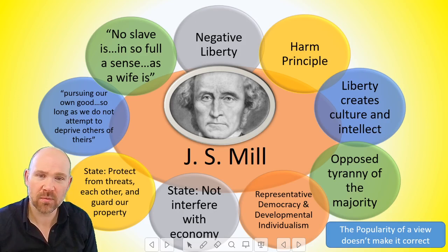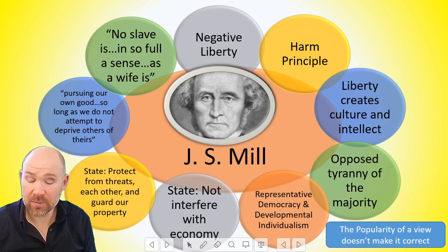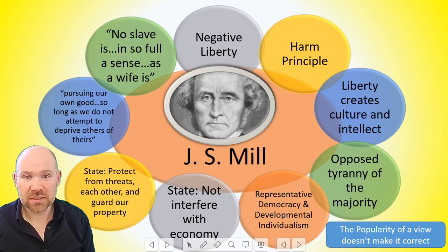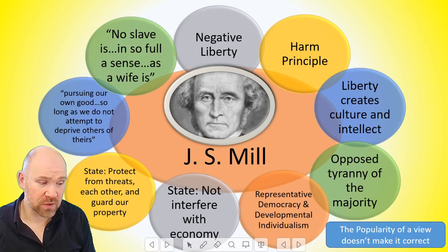There is a nice quote from Mill that goes with negative liberty and the harm principle: that so long as we are pursuing our own good, we can do that as much as we want, so long as we do not attempt to deprive others of theirs. He also wrote: 'There is no slave... in so full a sense as a wife is.' He started to talk about the role and rights of women, arguing that a wife is in many ways enslaved to her husband. You can use this quote from J.S. Mill when discussing Wollstonecraft and later Betty Friedan, to show that the rights of women and liberalism has a lot in common with the beliefs of feminism.